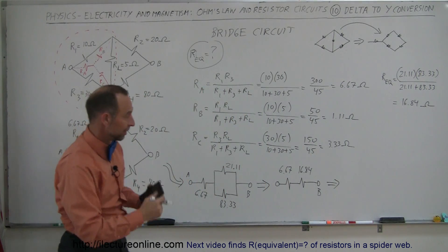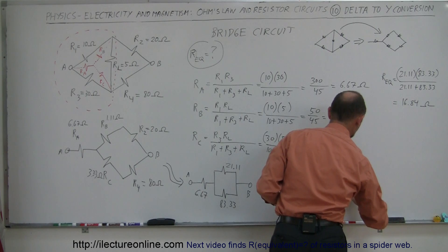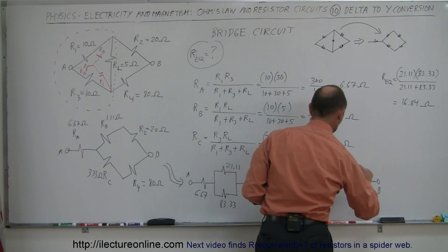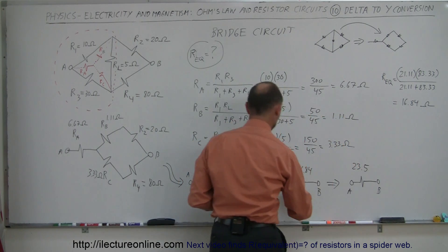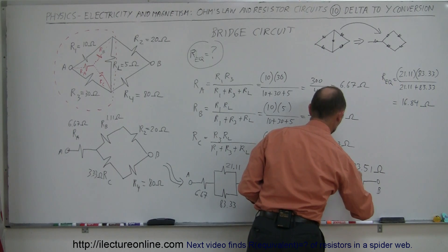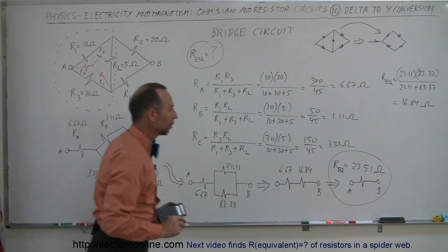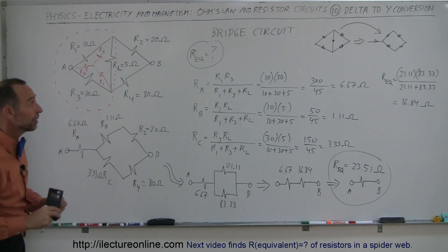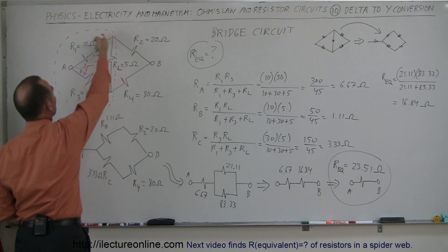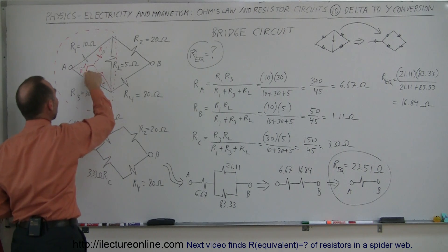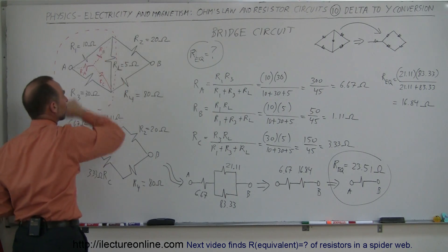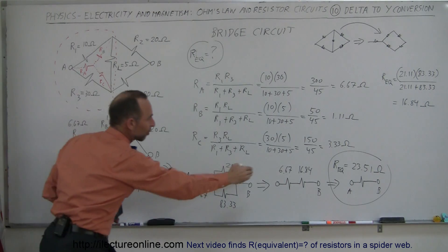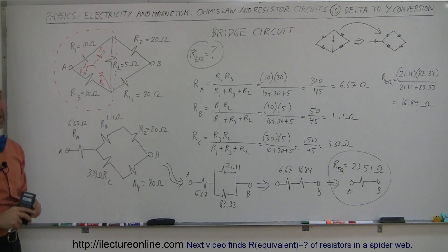Finally, we combine those two resistors in series: the 6.67-ohm Ra plus the 16.84-ohm parallel combination gives us a single equivalent resistor between A and B of 23.51 ohms. That is the equivalent resistance of the entire bridge circuit. The key technique is to take the triangular delta portion of the bridge circuit, convert it into a Y using the conversion formulas, plug in the new resistor values, and then solve the resulting simple series-parallel circuit using our normal rules. A very handy trick.